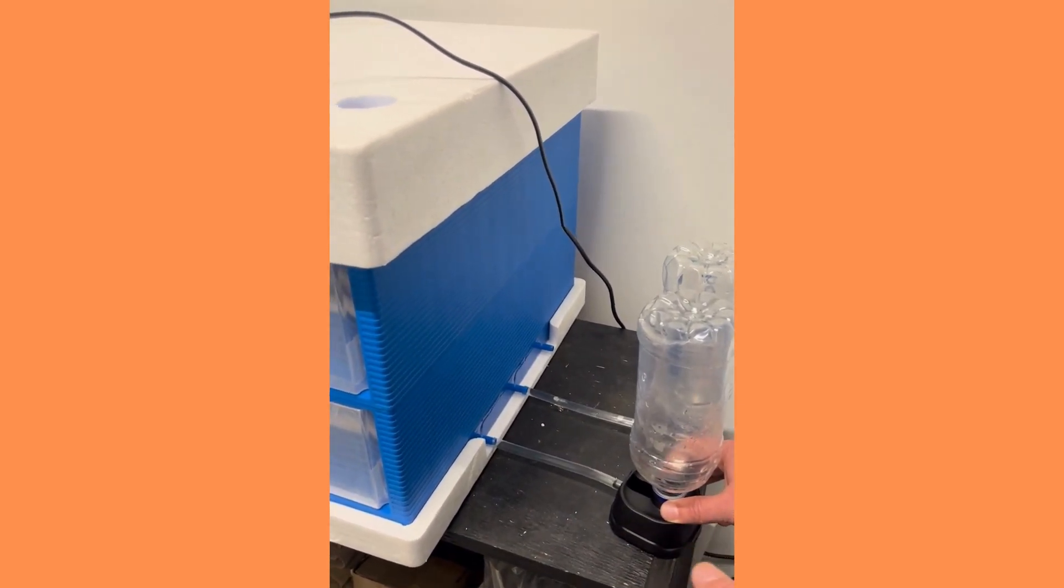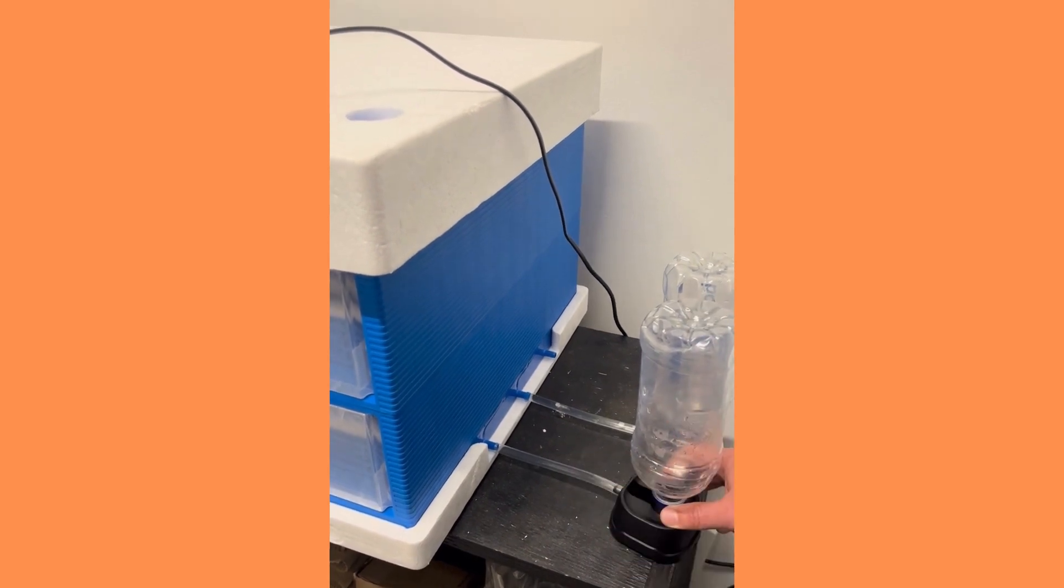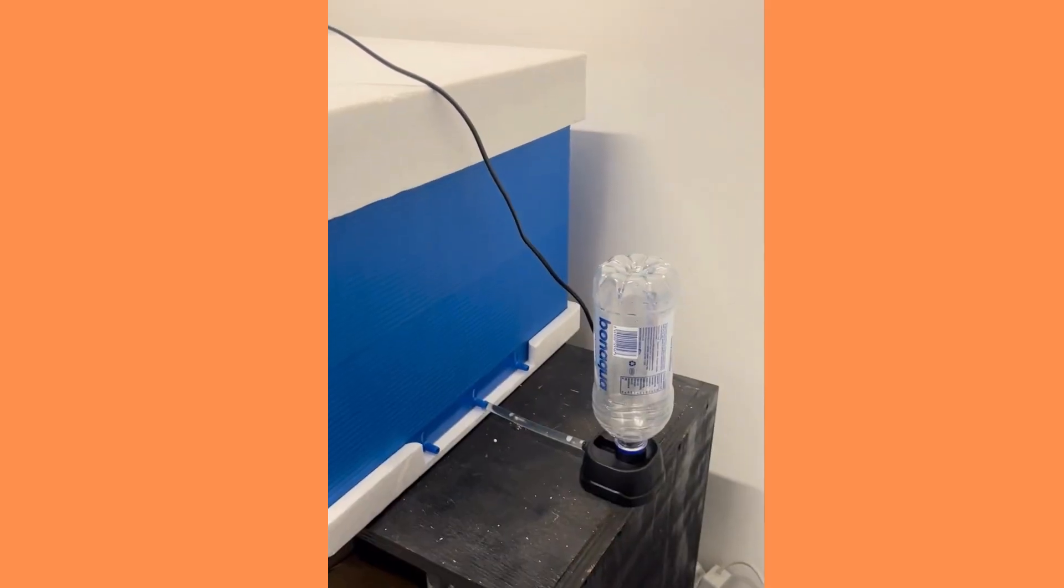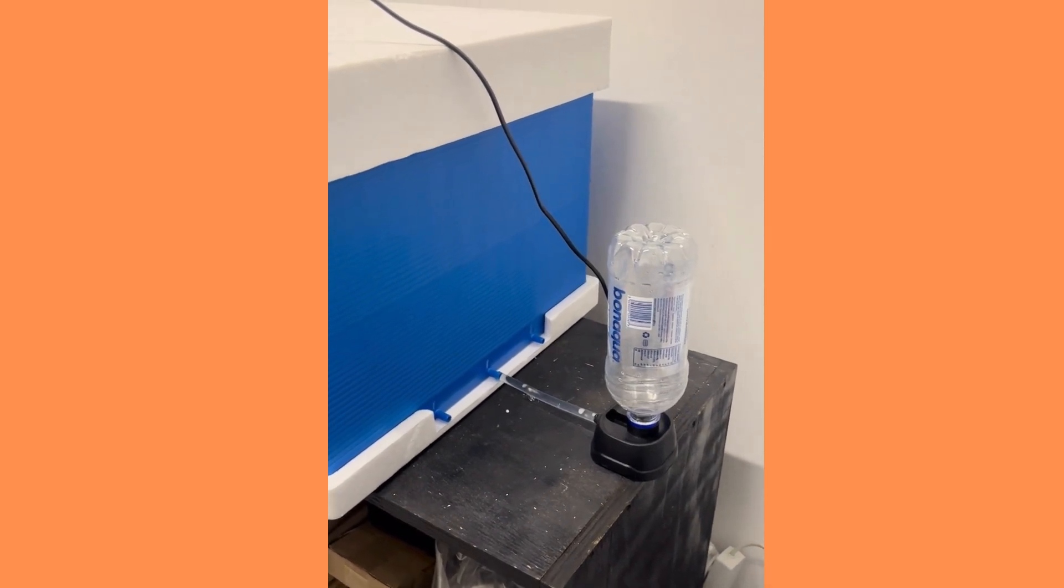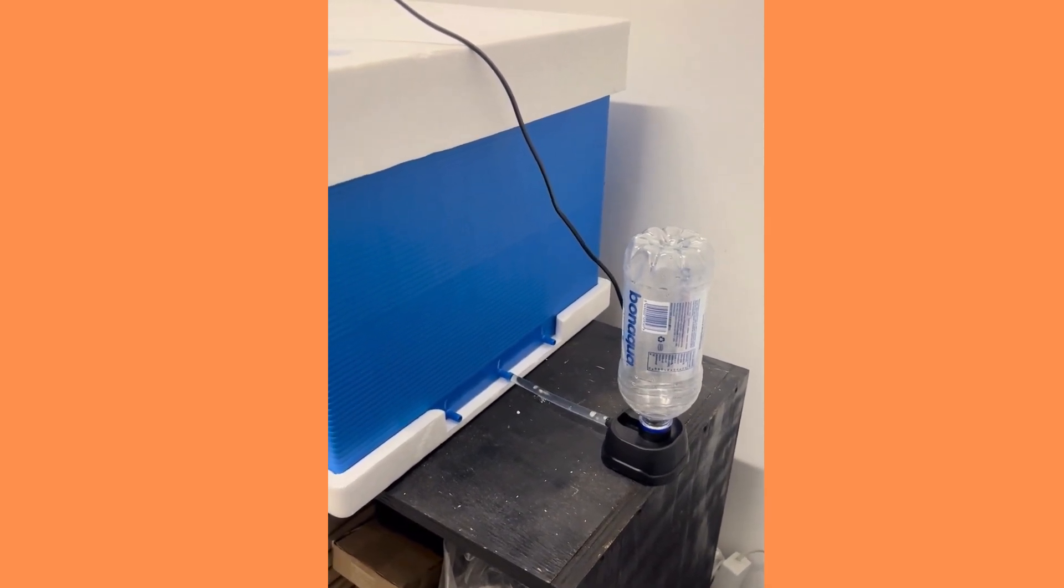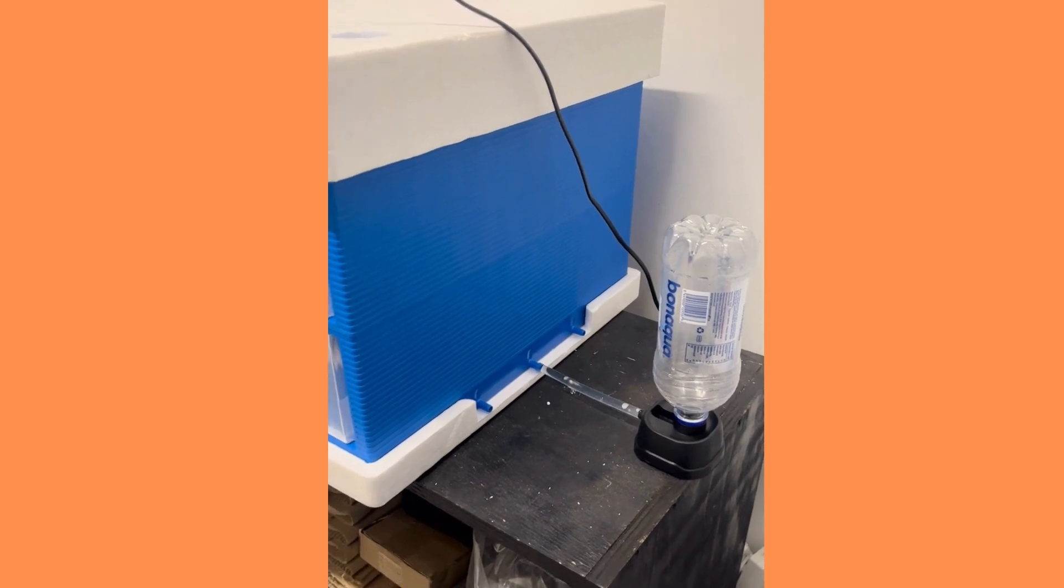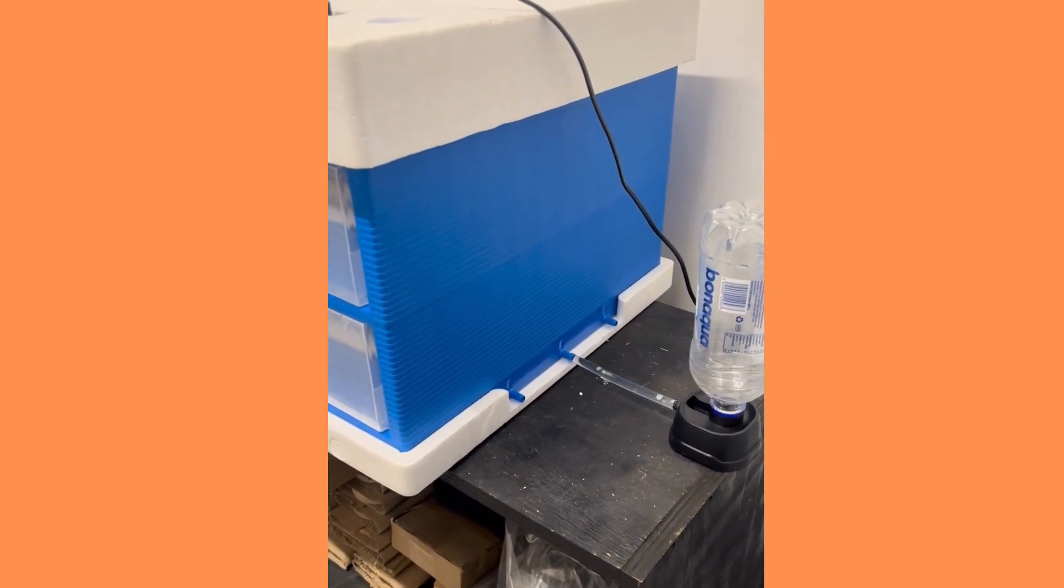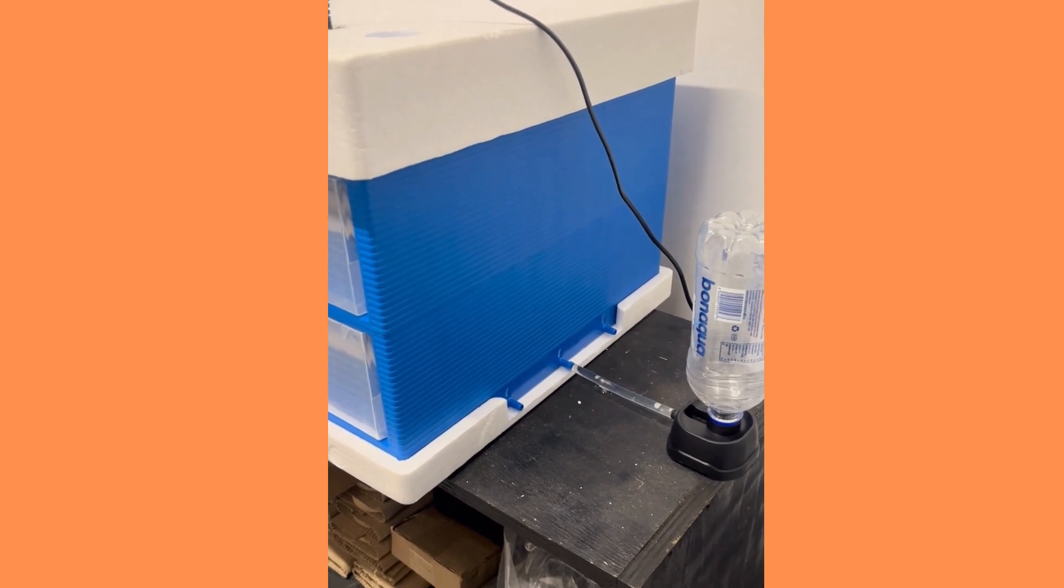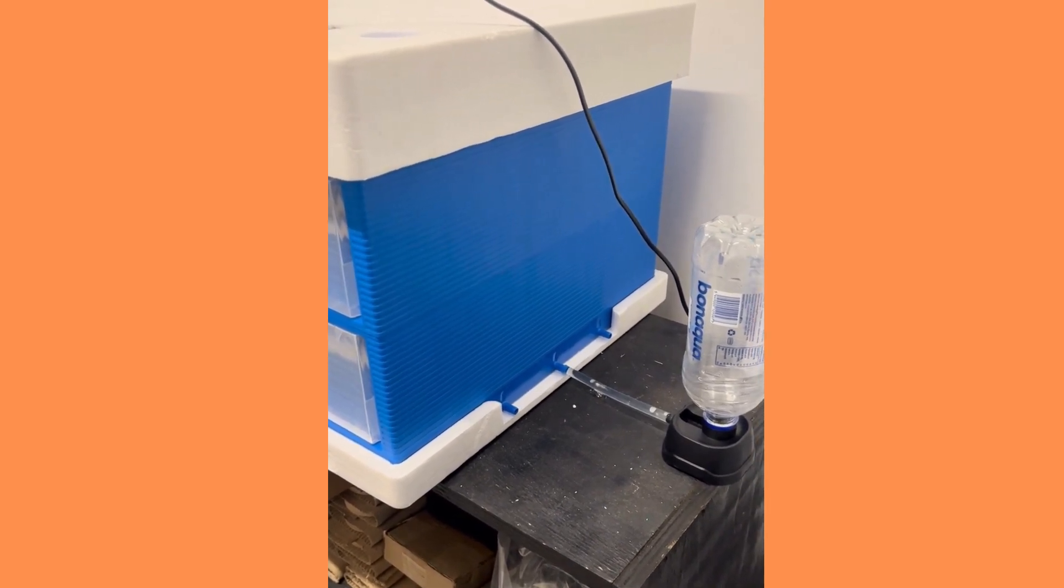We've got a question on why we are only using one compartment if there's three available. We will most probably use all three when we hatch and need a very high humidity. If we do all three right now, the humidity is going to be way too high for our humidity requirements of the first 18 days.